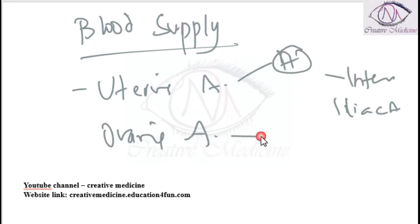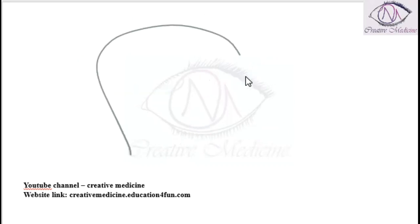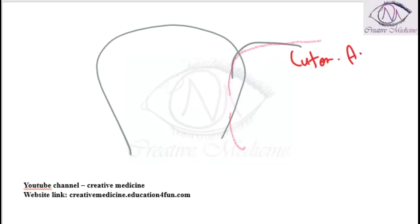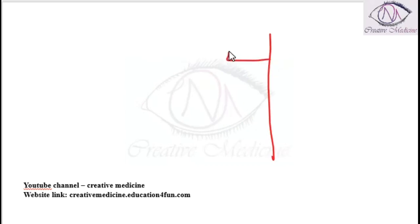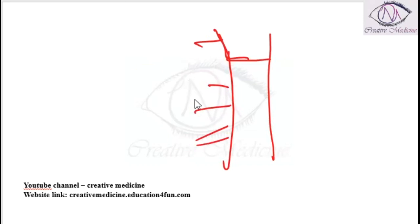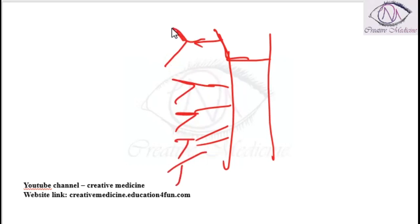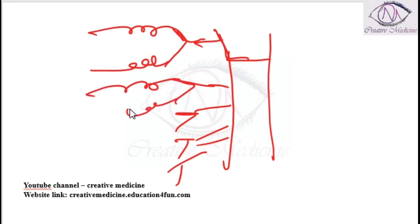Branches of uterine artery from outside to inside while supplying the uterus include uterine artery followed by arcuate artery, which supplies the outer one-third of the myometrium. Radial artery gives two branches and supplies the two-thirds of the myometrium. Then basal artery, which is a branch of radial artery and supplies the basal layer of endometrium. Spinal artery is the second branch of radial artery and supplies the functional layer of endometrium.